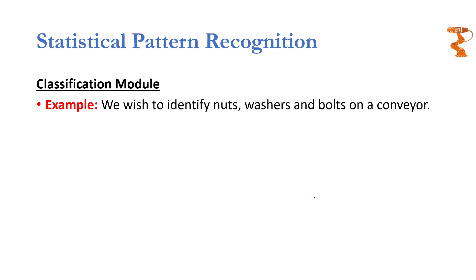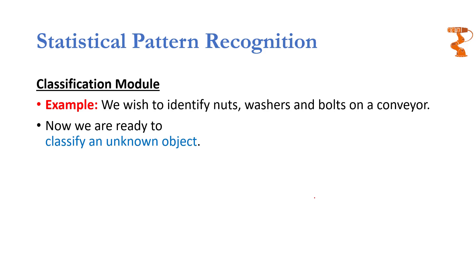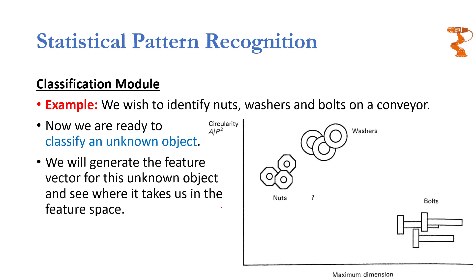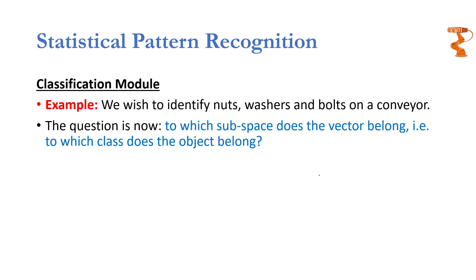Once we have generated a populated feature space, we are ready for classification of an unknown object. Suppose an unknown object is encountered in the input image. We will generate its feature vector and place it on the same feature space generated during our training phase. As per the extracted feature values, this object appears somewhere in a particular region of the space. Now the real task of the classification module begins — identifying whether it is a nut, washer, or bolt.